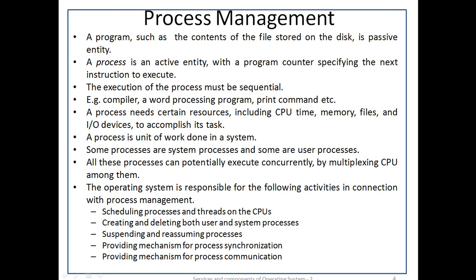These resources are either given to the process when it is created or allocated while it is running. A process is a unit of work in the system. Such a system consists of a collection of processes — some are operating system processes and some are user processes. All these processes can potentially execute concurrently by multiplexing the CPU among them.